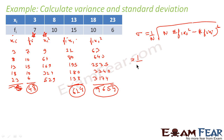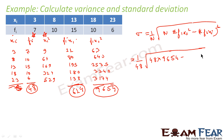Now I put everything into the formula: standard deviation equals 1 by n, where n is 48, into root of n times sigma fi·xi squared, which is 9654, minus sigma fi·xi whole square, that is 614 squared.